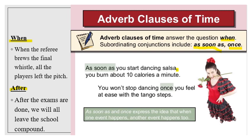Look at the other sentence: 'You won't stop dancing once you feel at ease with the tango steps.' 'Once' initiates the dependent clause 'once you feel at ease with the tango steps.' This is the dependent clause. It follows the independent clause, and in this case you don't need a comma.